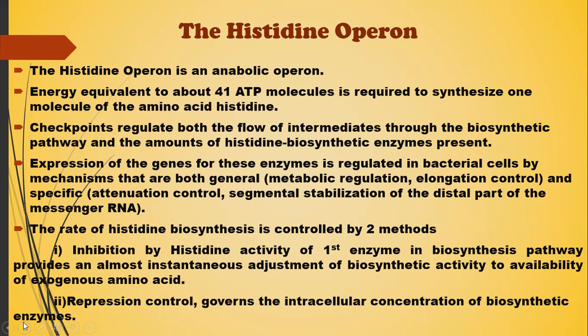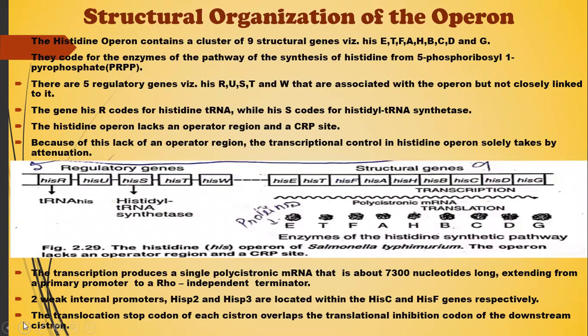The ability to adjust histidine production to growth rate can provide a significant economy in metabolism. Regarding the structural organization of the operon, the histidine operon contains a cluster of nine structural genes — hisE, hisI, hisF, hisA, hisH, hisB, hisC, hisD, and hisG — which code for enzymes in the synthesis of histidine from 5-phosphoribosyl-1-pyrophosphate. There are also five regulatory genes — hisR, hisU, hisS, hisT, and hisW — associated with this operon but not closely linked to it. hisR codes for histidine tRNA, while hisS codes for histidine tRNA synthetase.